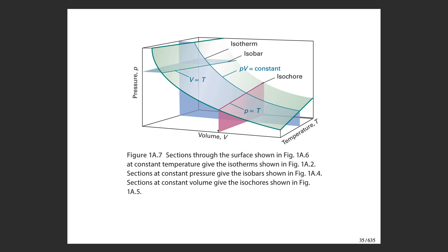The term isochoric means constant volume, so this type of curve is called an isochore. The term isobaric means constant pressure; the teal curve is called an isobar because everywhere along it, the pressure has a fixed value.